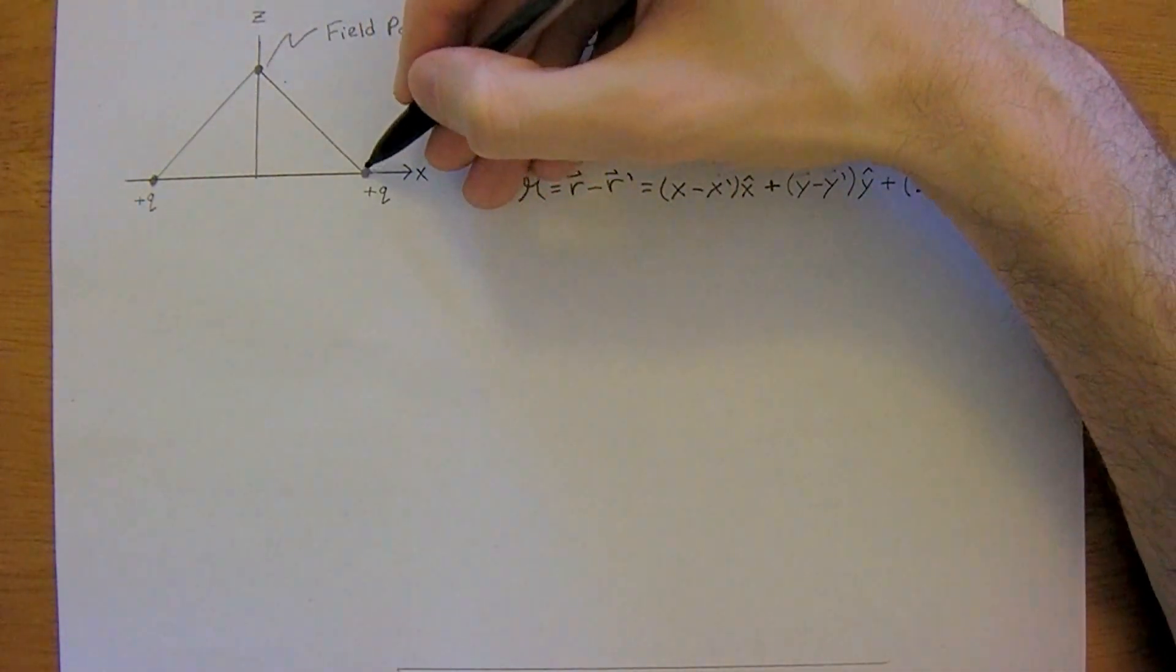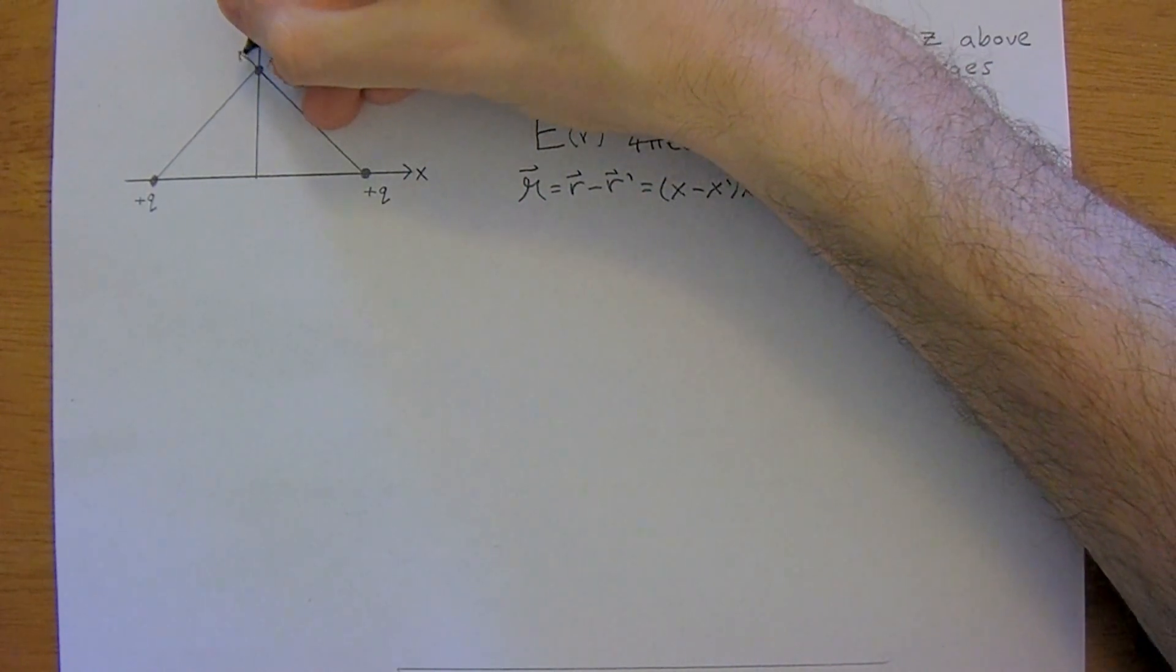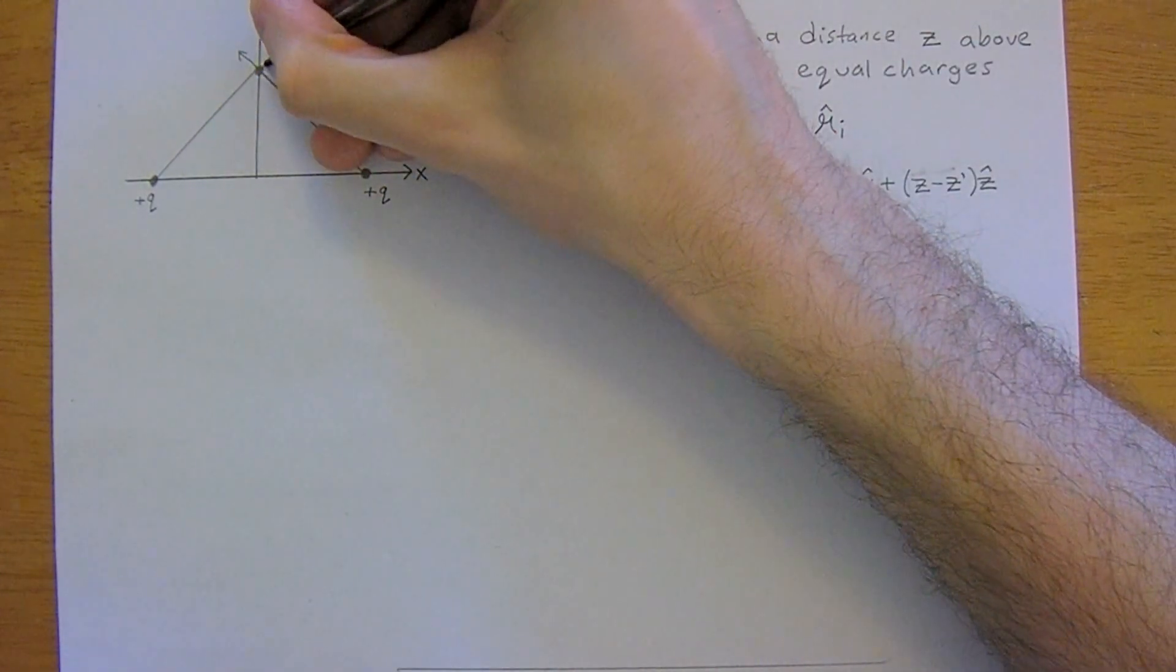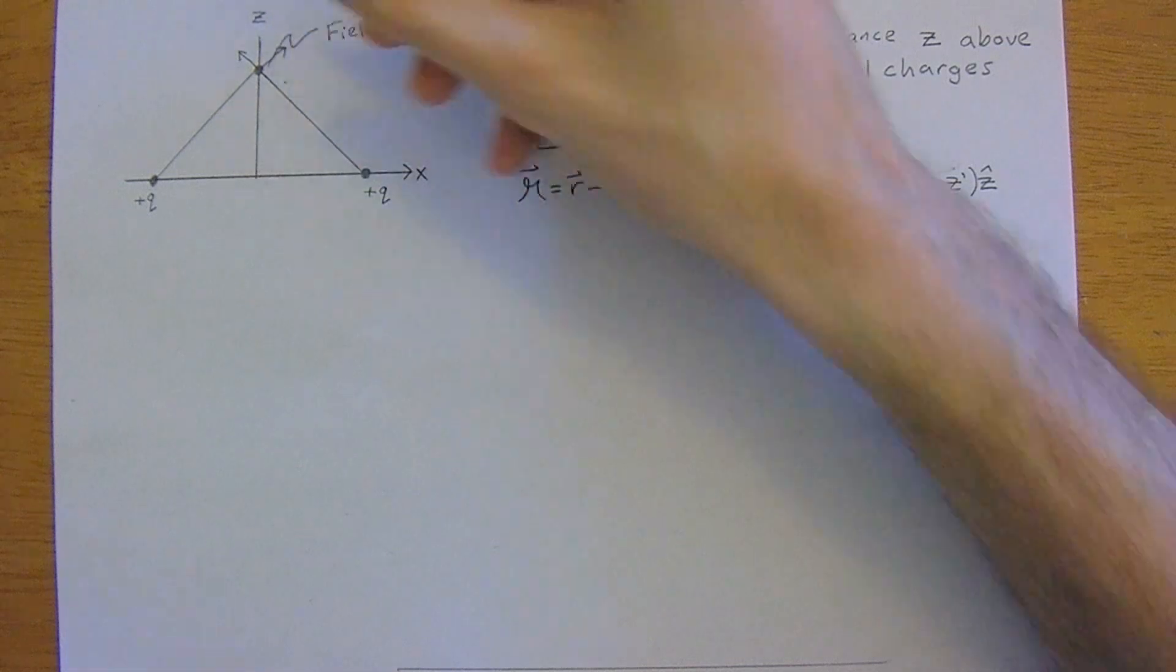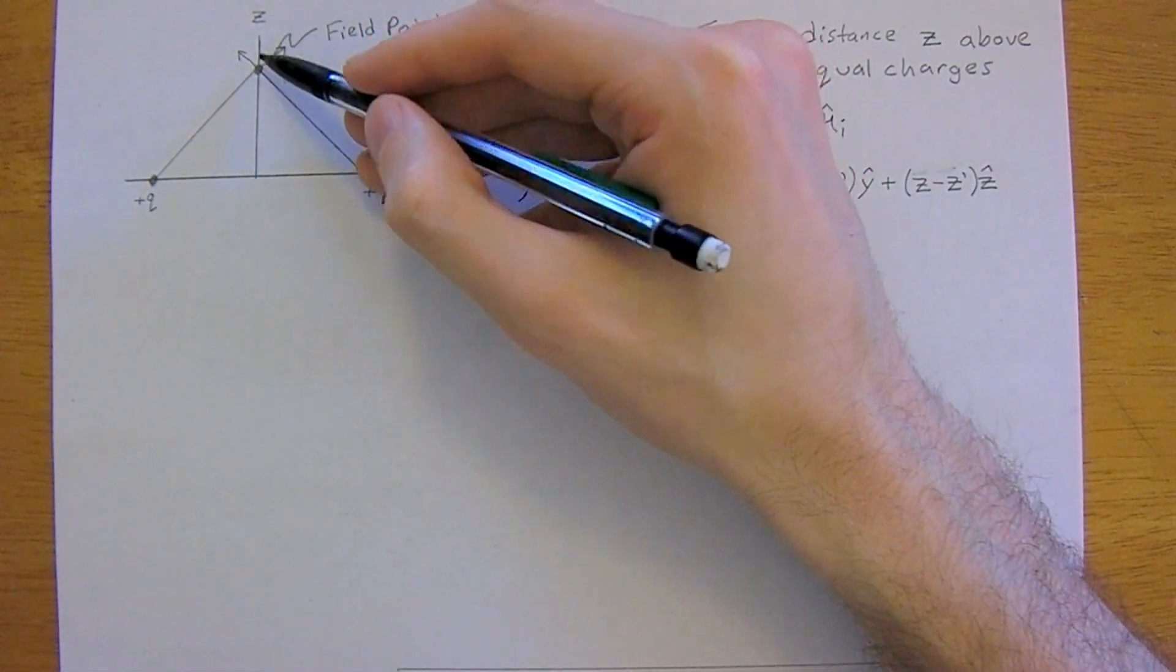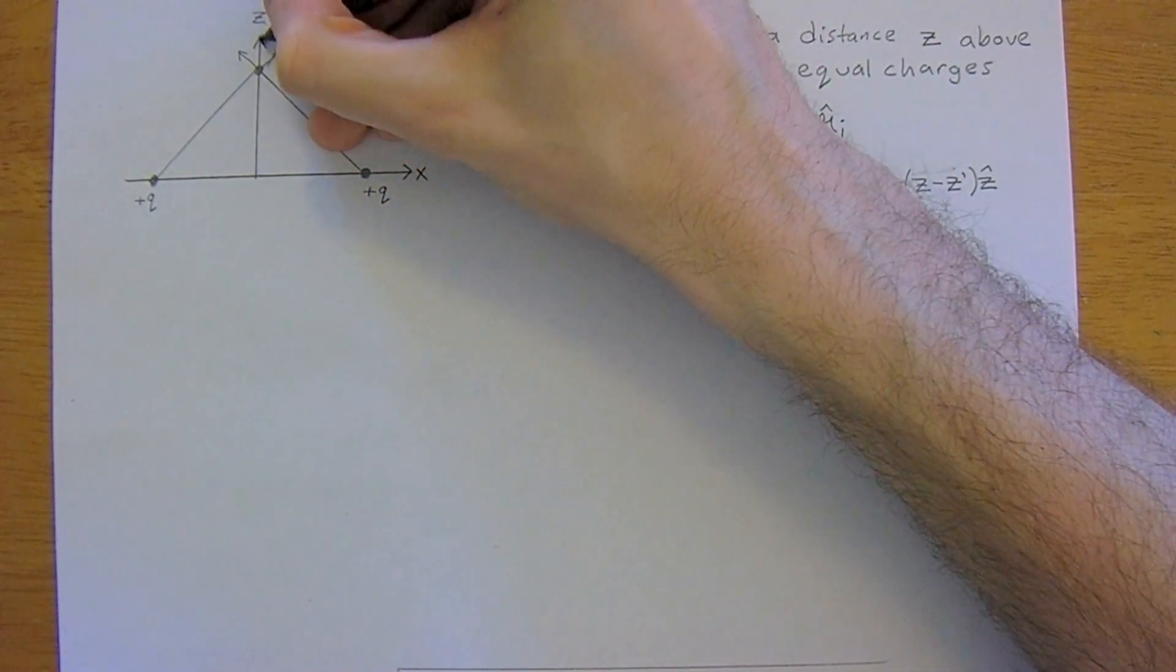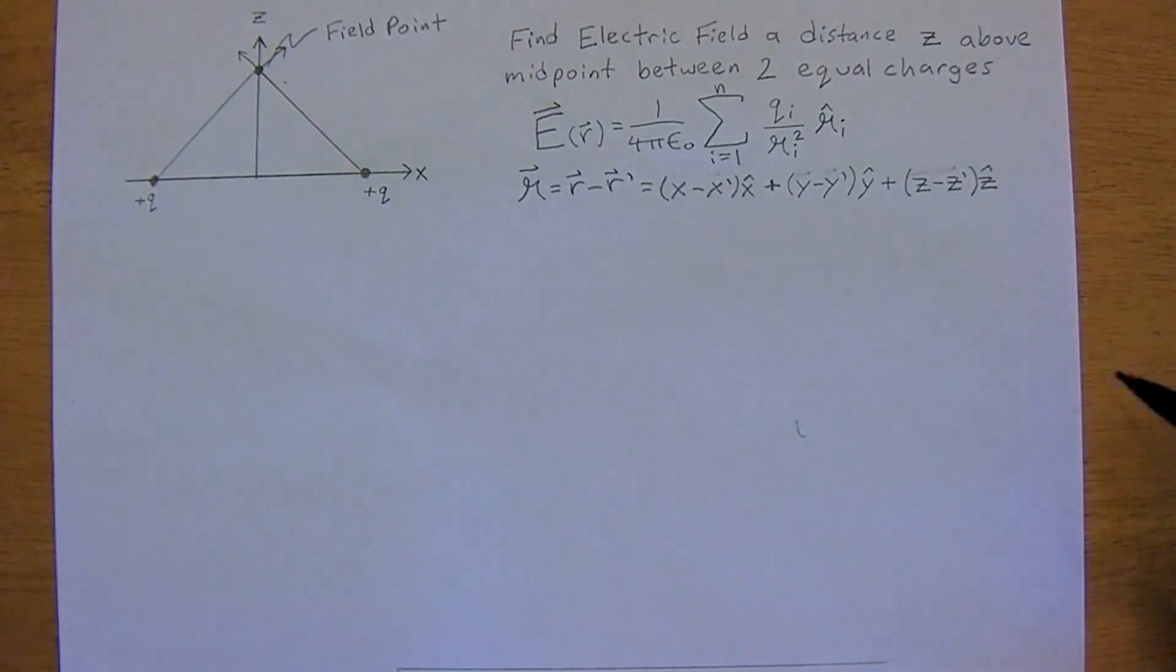And just by deduction, we know that this positive charge will be pointing out, giving an electric field that direction, and this other charge will be giving an electric field this direction. So these two should be equal and offset and cancel, and leave us with only an electric field in the z-hat direction.